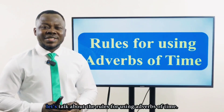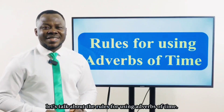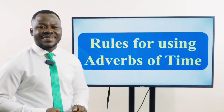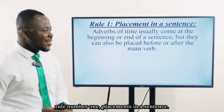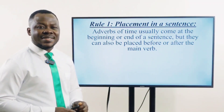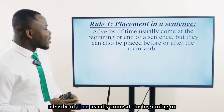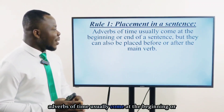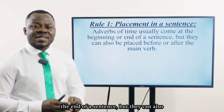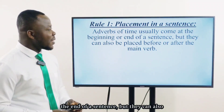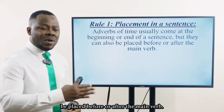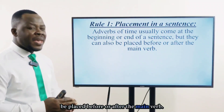Let's talk about the rules for using adverbs of time. Rule number 1: Placement in a sentence. Adverbs of time usually come at the beginning or the end of a sentence, but they can also be placed before or after the main verb.